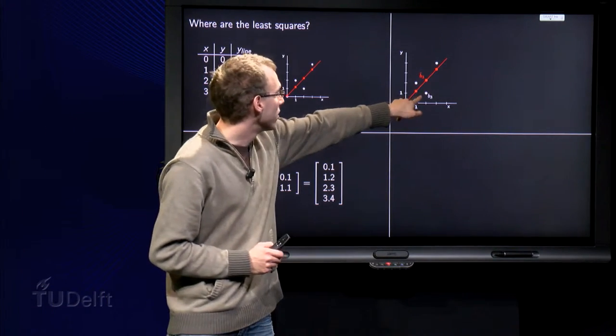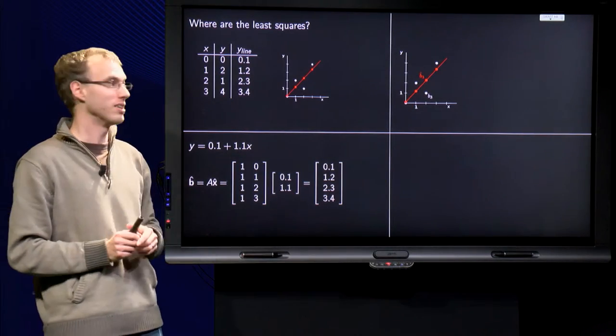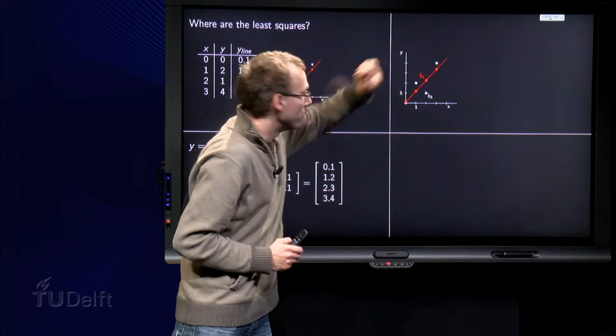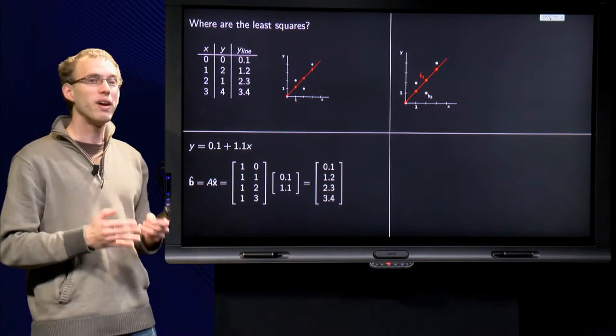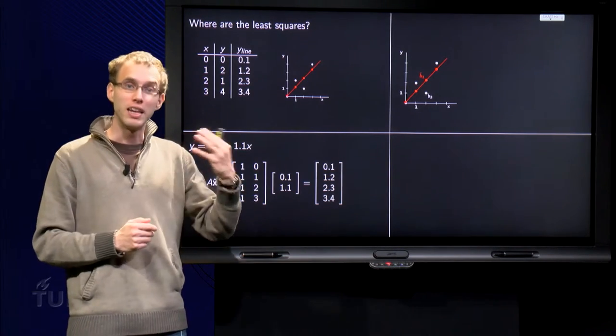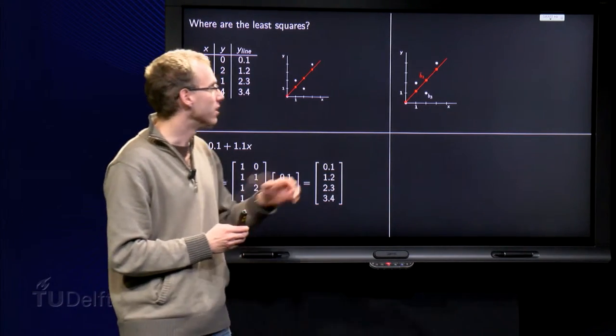Similarly over here b hat 4 and b 4 for example. So now we can locate both the components of b and the components of b hat in the figure.